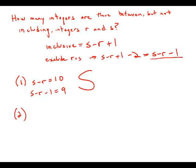Statement number 2 tells us there are 9 integers between, but not including, r plus 1 and s plus 1. Let's think about this.